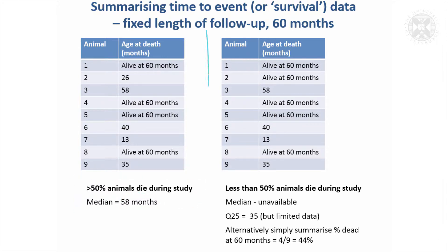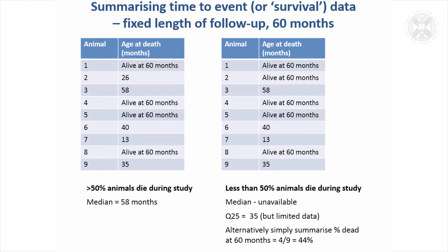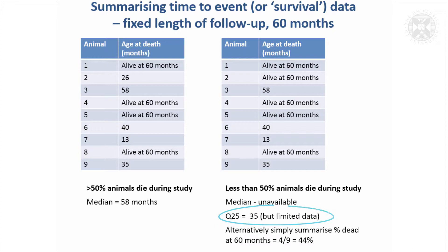But if we're in a situation where not half the animals had died — this second situation — five of them are still alive at the end of the study at 60 months. What's the median in that case? Basically you can't say it's 60 months, because the next animal to die is probably going to die at older than 60 months, so it's not really available. We could get the lower quartile but we've got limited data, so we would have to resort to simply summarising how many had had the event — four out of nine, or around 44% of the animals had died at 60 months.